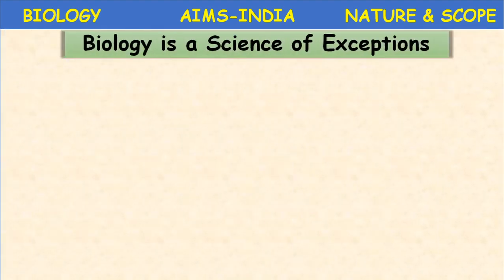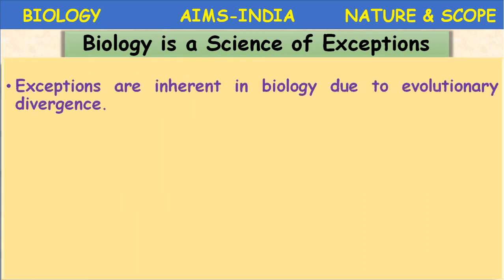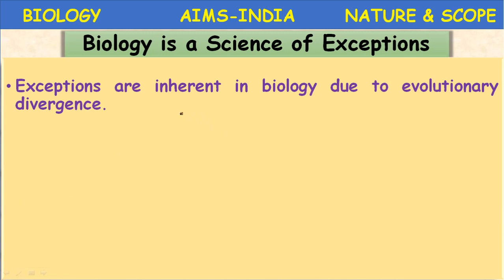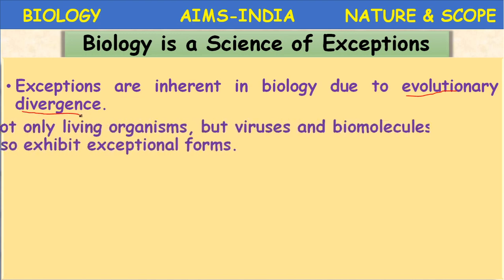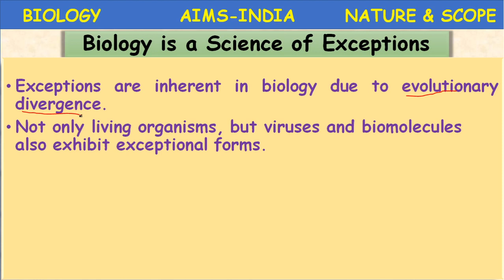Biology is a science of exceptions because every branch has its own exceptions. Biology is also an exceptionally important branch of science. The exceptions are inherent in biology due to evolutionary divergence. Not only living organisms, but viruses and biomolecules also exhibit exceptional forms.